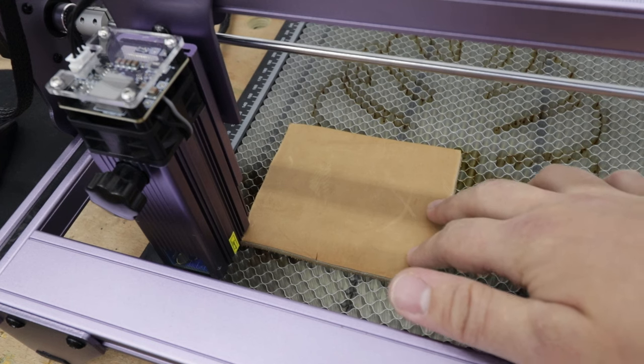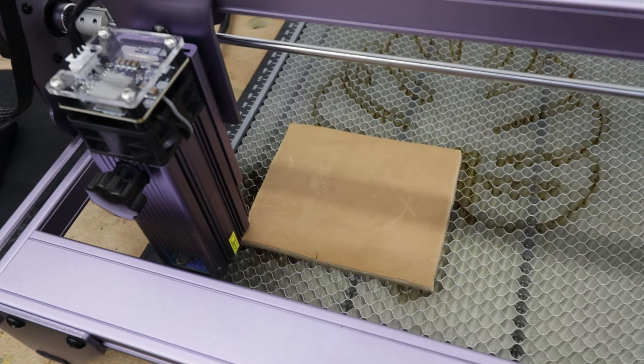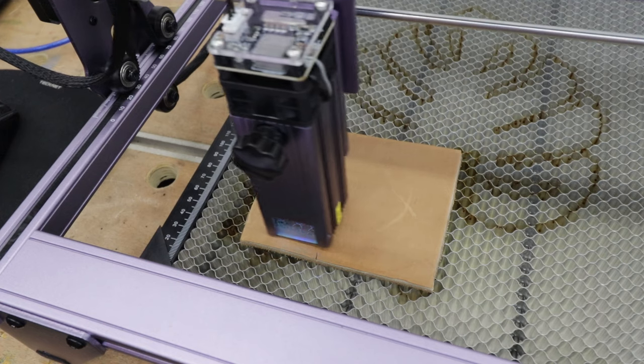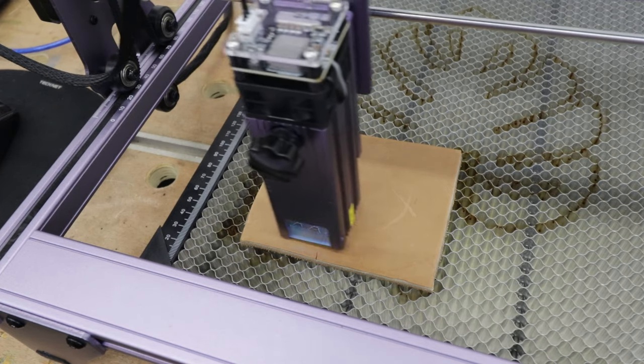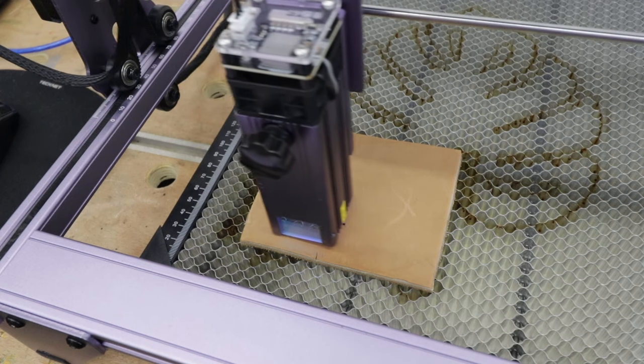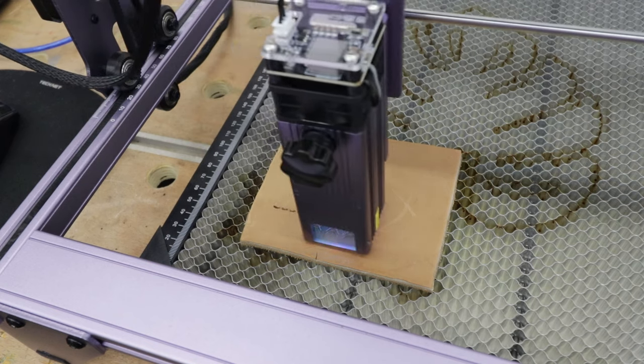Next test, 5 millimeter leather. Let's have a look how the laser will cope with engraving that. The setup here is 6,000 millimeters per minute and 80% power.